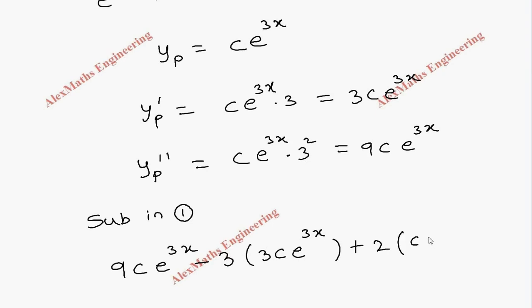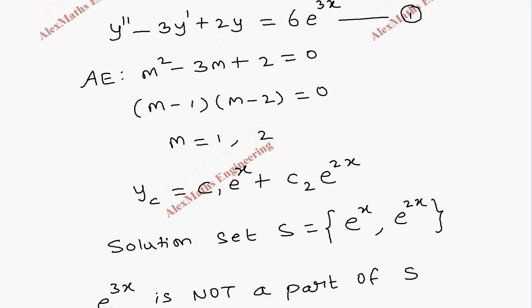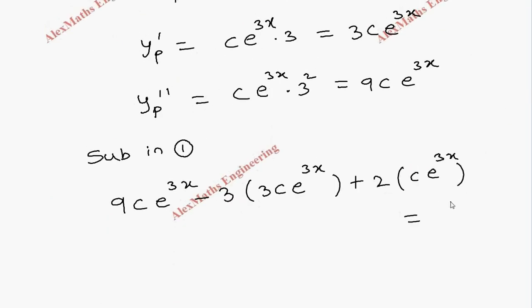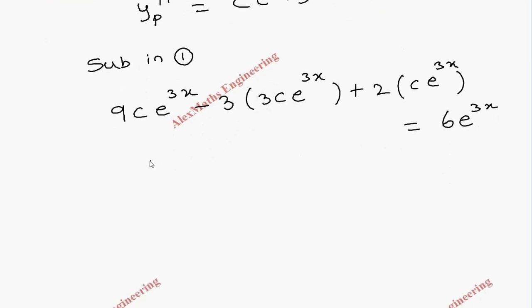And on the other side of the equation we have 6e^3x. So when I simplify this, the first term is 9ce^3x, the second term is -9ce^3x, plus 2ce^3x equals 6e^3x.